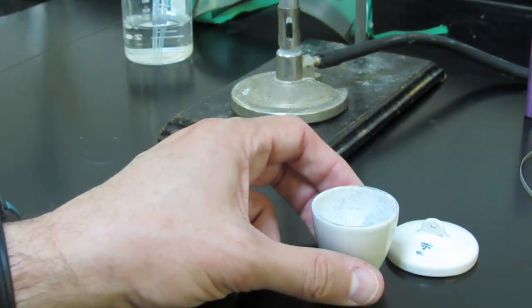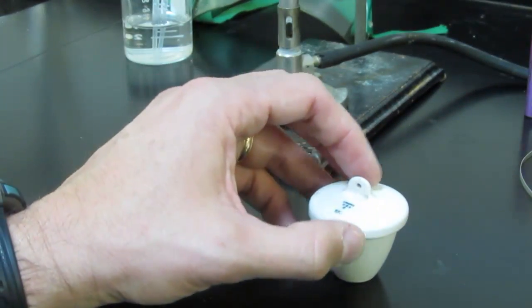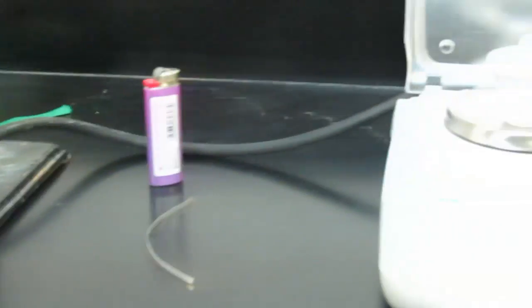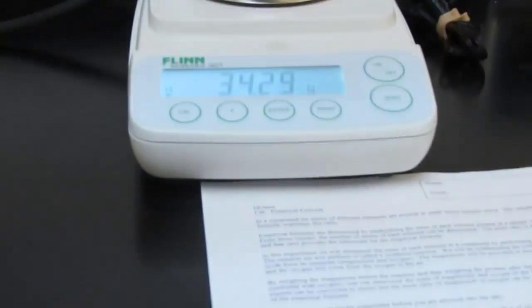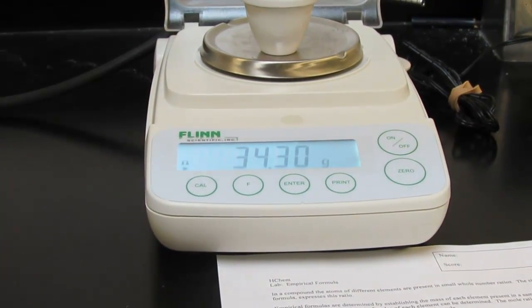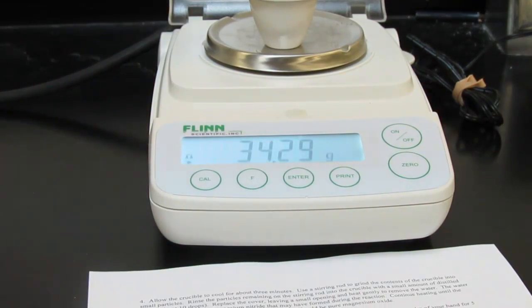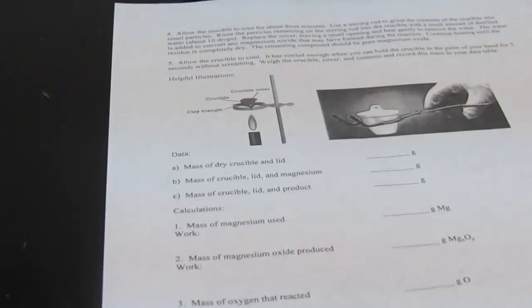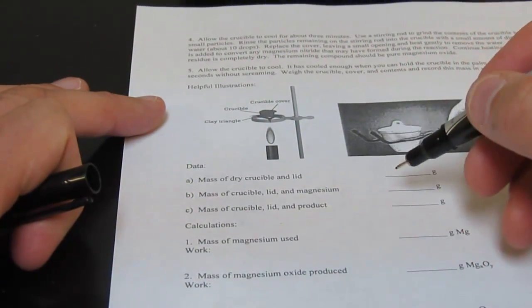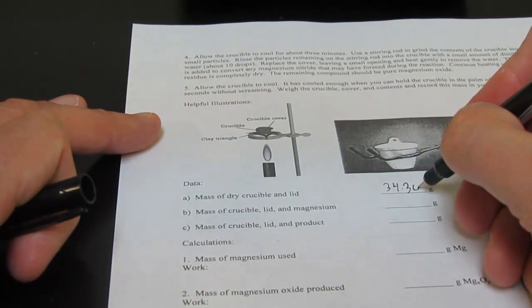So we're going to take our crucible and our cover, and we're going to go ahead and put them on our balance. And I'll do that right now. And we'll take the mass of that. So the mass of our crucible and cover empty is 34.30 grams. So on our data table, we have a spot for the mass of the dry crucible and lid, which would be 34.30 grams.